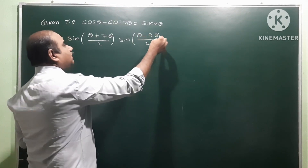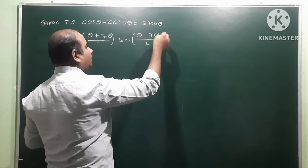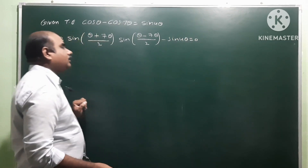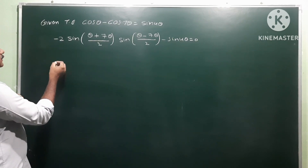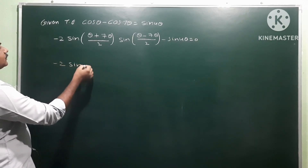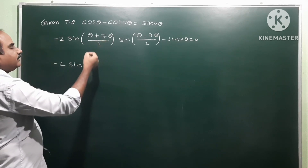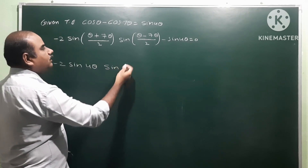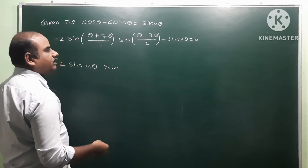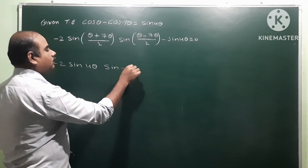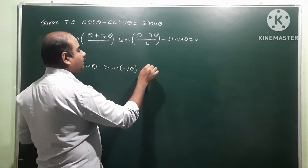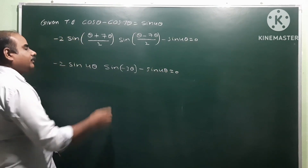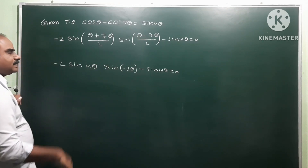Transposing sin 4θ to the left side it becomes minus, so the equation equals 0. This gives: minus 2 sine(8θ/2) times sine(−6θ/2) minus sine 4θ equals 0, which simplifies to minus 2 sine 4θ times sine(−3θ) minus sine 4θ equals 0.